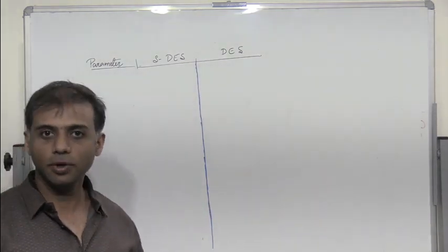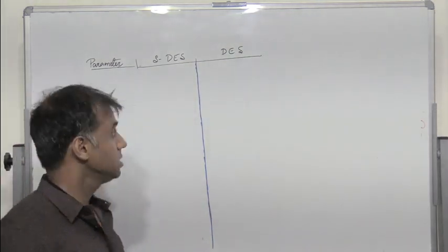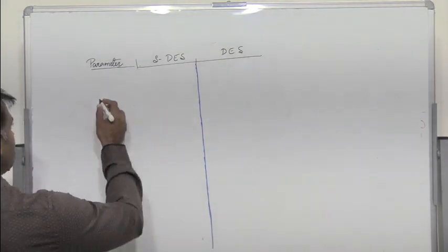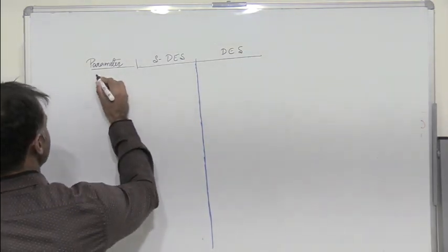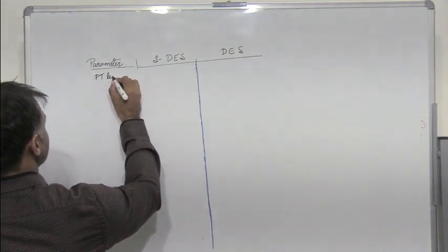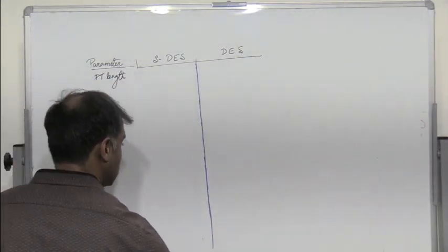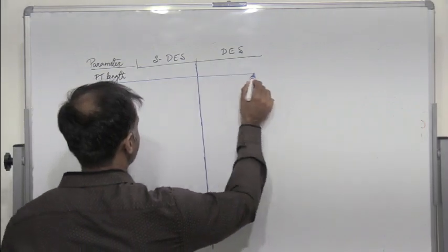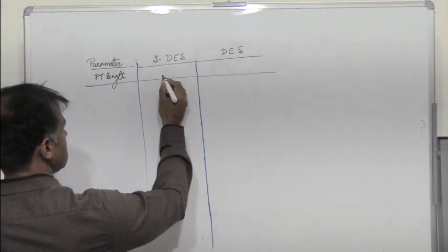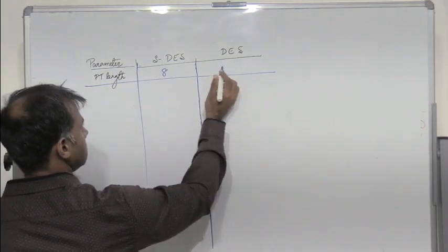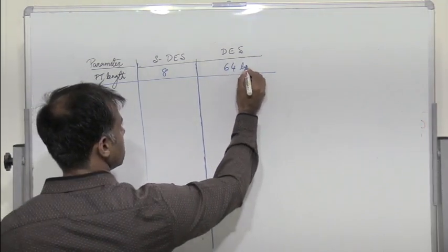Let us observe some of the major differences between S-DES and DES. So first we have the parameter which is plain text length. So what is the plain text length in S-DES? The plain text length in S-DES is 8 bits and DES is 64 bits.